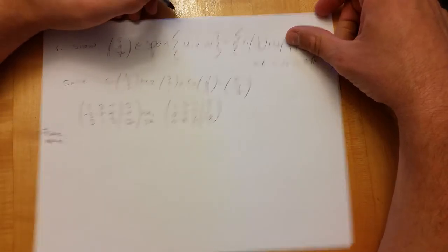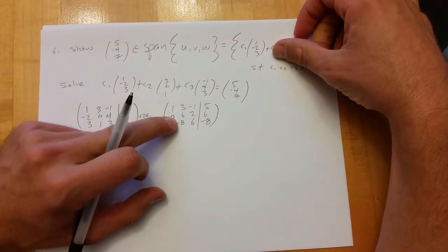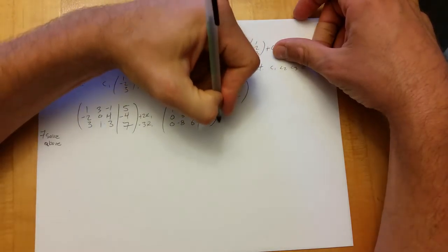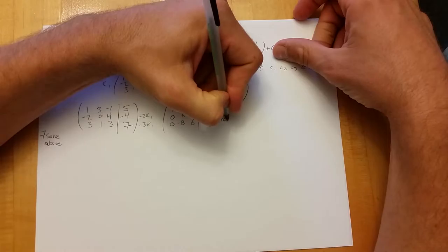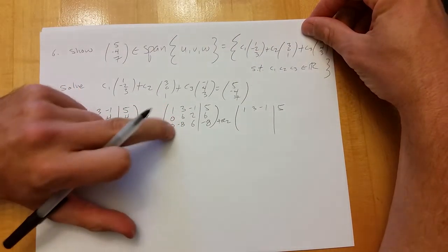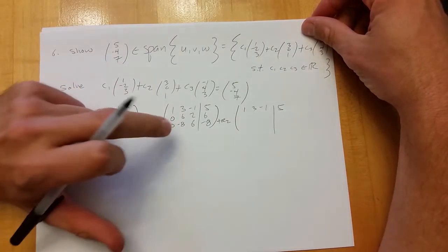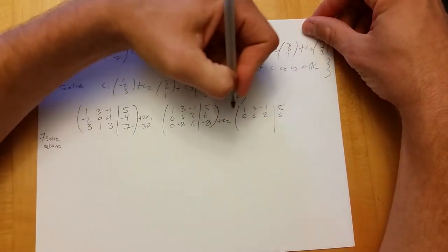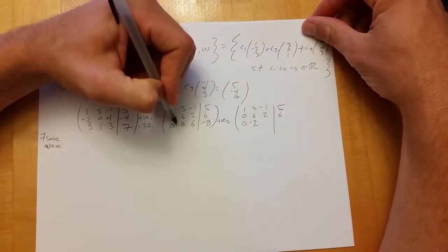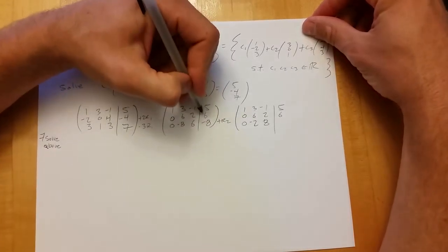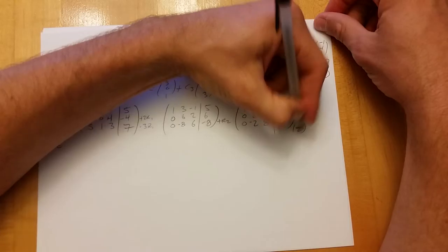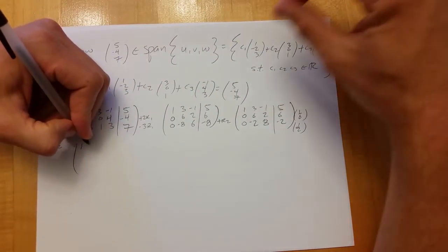Now the same trick as before — I'll use this six. I'll add row two here to make the eight closer to zero. We get minus two, minus two, eight, and six minus eight is minus two. Then go one-sixth and a half — we get to the same place that way.